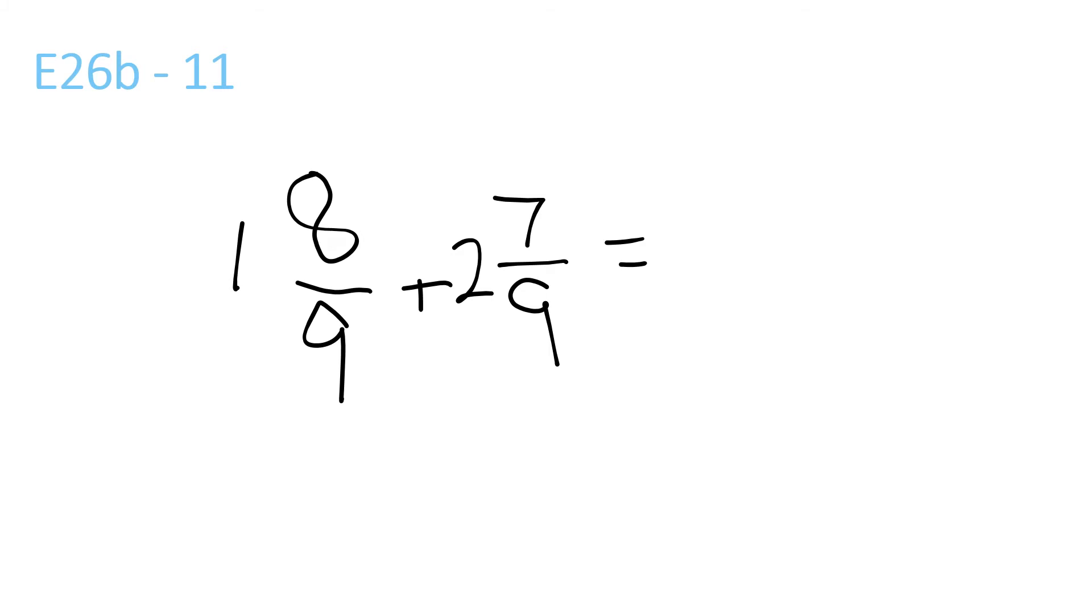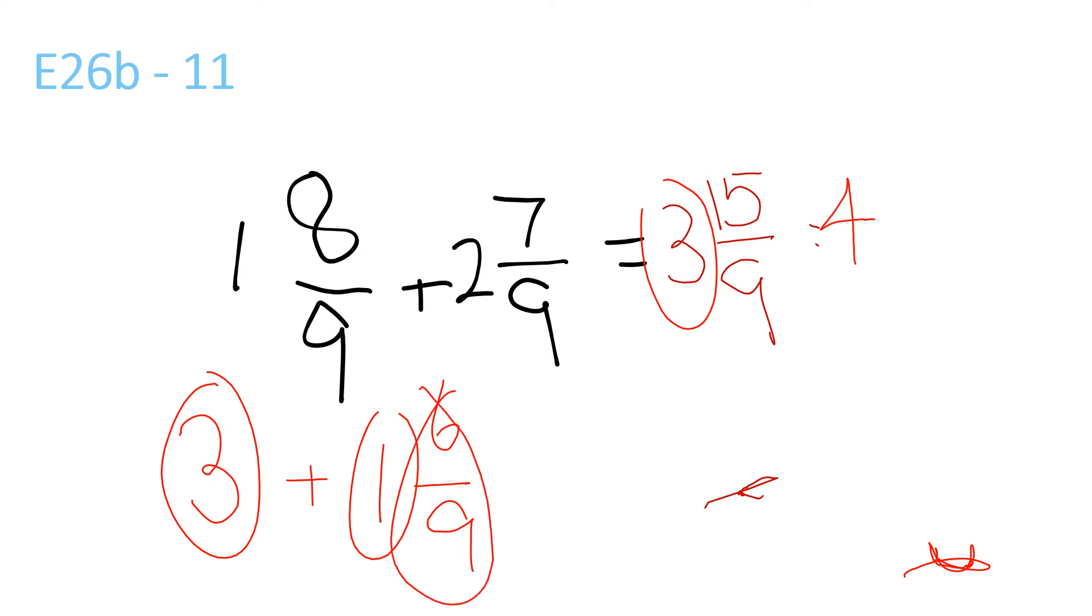Number 11, 1 plus 2 is 3, 8 plus 7 is 15 over 9 equals, this is just a side note down here, right here is going to be a side note, so, 3 plus 9 goes into 15 once, remainder 6 over 9. So, over here, since the 3 is there, we do 3 plus 1, so, we put 4 and 6 over 9. 6 and 9 can be reduced to 2 and 3, so it would be 4 and 2 over 3.